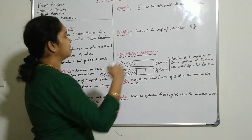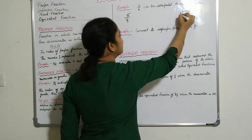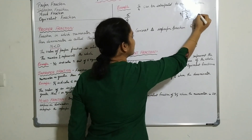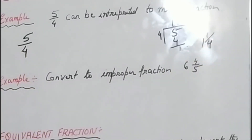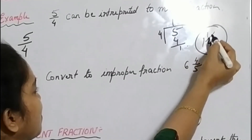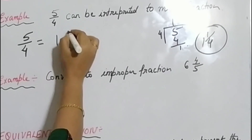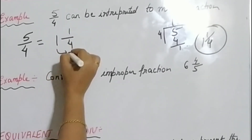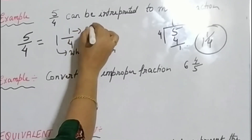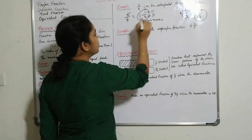We will interpret 5 by 4 as a mixed fraction. Divide 5 by 4: 1 four is 4, remainder is 1. So you write 1 and 1 by 4 — where 1 is the whole number, 1 is the numerator, and 4 is the denominator. This is the mixed fraction: a whole number followed by a proper fraction.